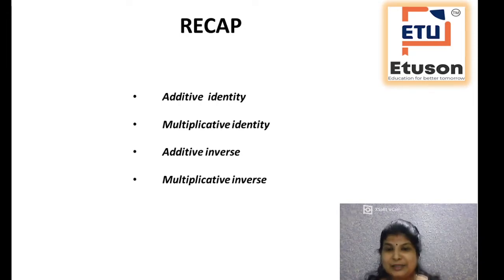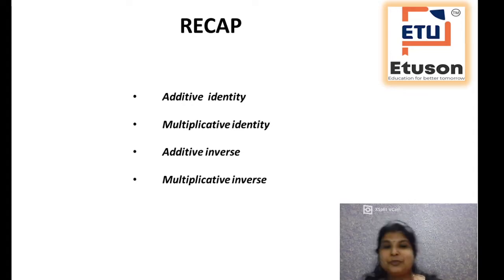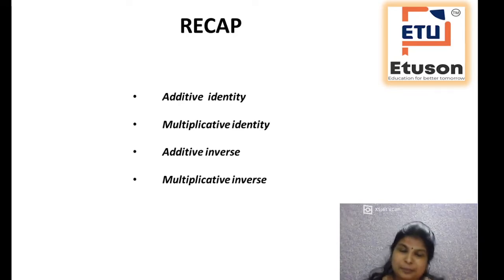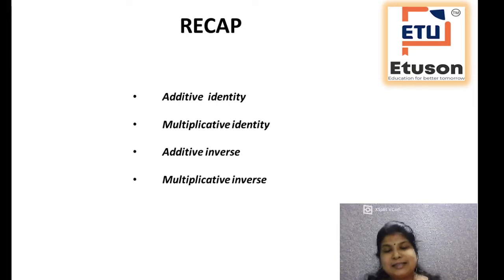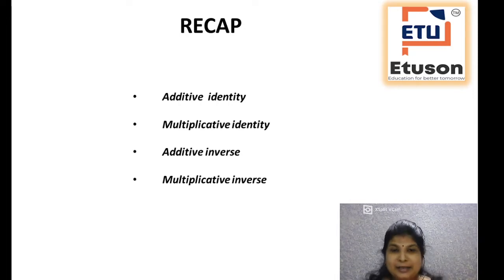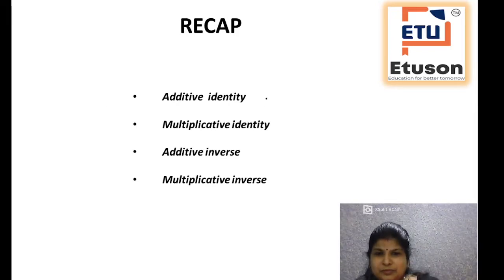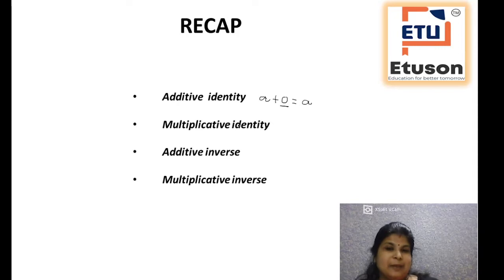In identity, we have studied additive identity and multiplicative identity. Identity means in case of addition, if you are adding a number with any positive integer, you are getting the same result — the result remains unchanged. So what was the additive identity for the integer? It was 0. In additive identity, it was a plus 0 is equal to a. So 0 was called the additive identity of the integer.